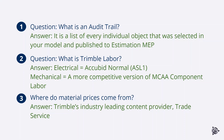The second question: what is Trimble labor? The answer for electrical is that it is based on the Accubit Normal or ASL1 units. For mechanical, it's a more competitive version of MCAA's component labor. The last question: where do material prices come from? The answer is that it's based on Trimble's industry-leading content provider, Trade Service, and the prices are manufacturer-published list price.